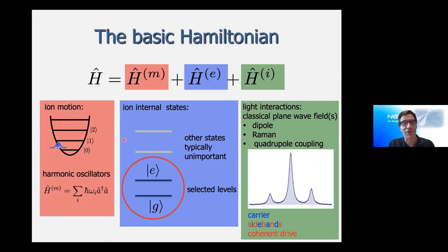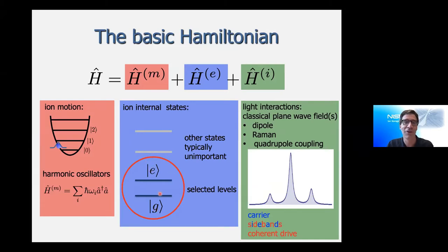For the internal states, most atomic ions are rather complicated — they have hyperfine states, electronic structure, metastable states, and so on — but typically it's enough to concentrate on just two of them. I'll call them G for ground state and E for excited state. This makes up the internal state Hamiltonian H_E.